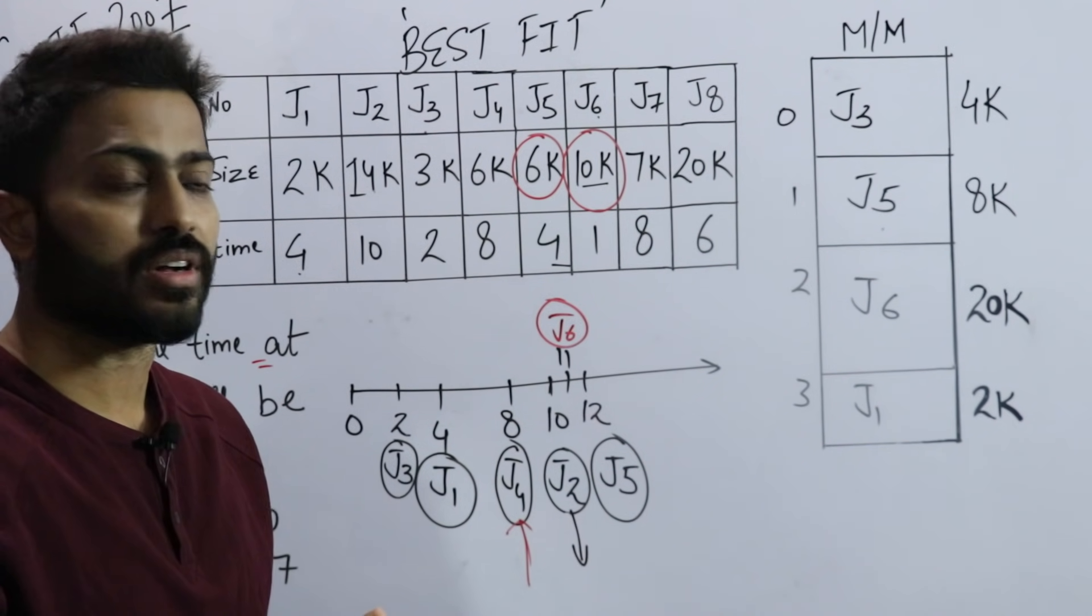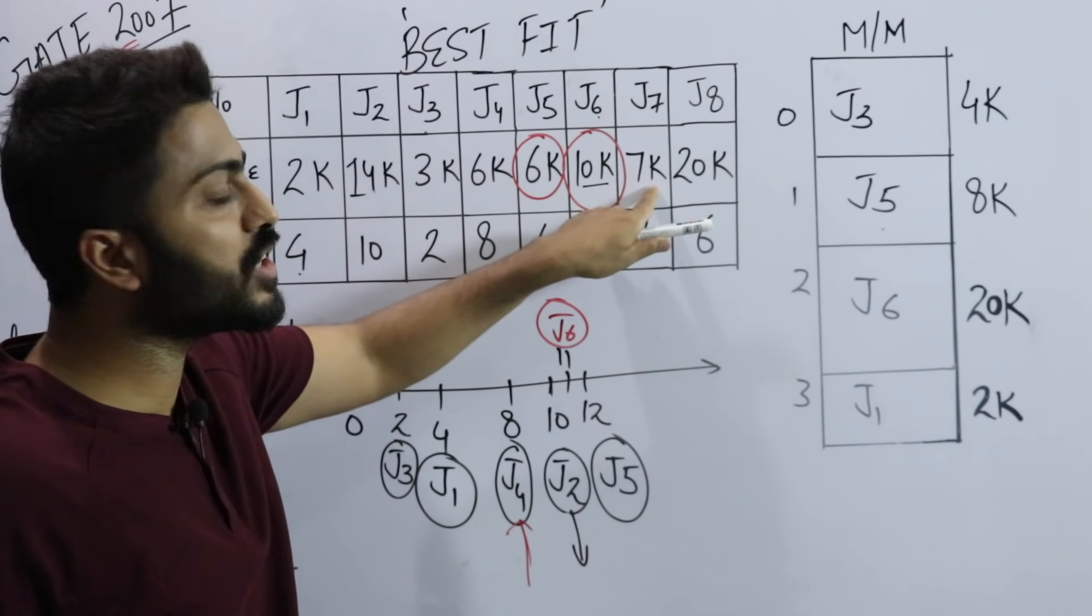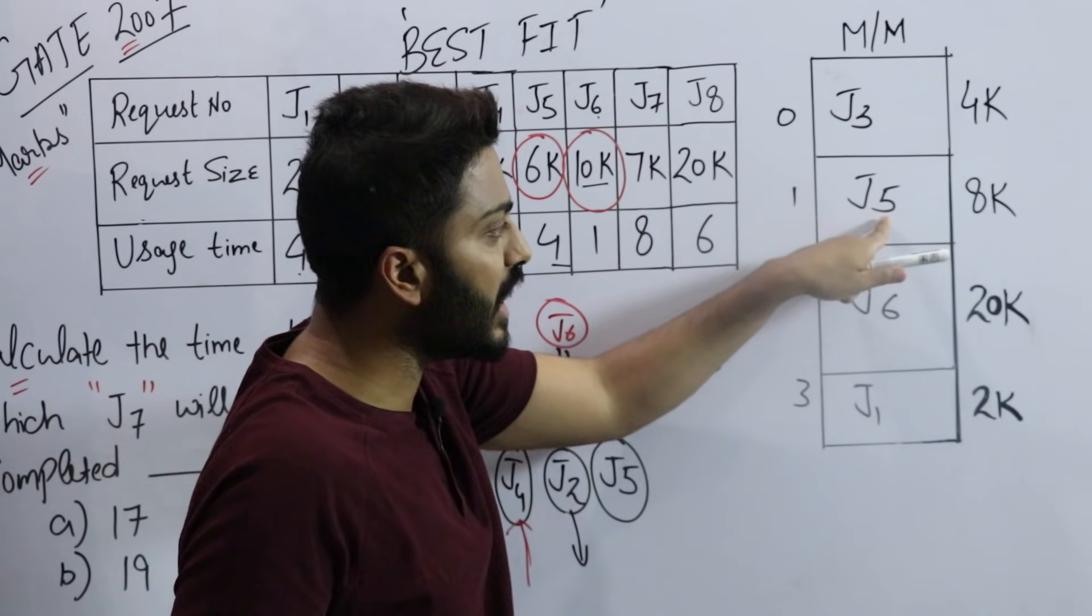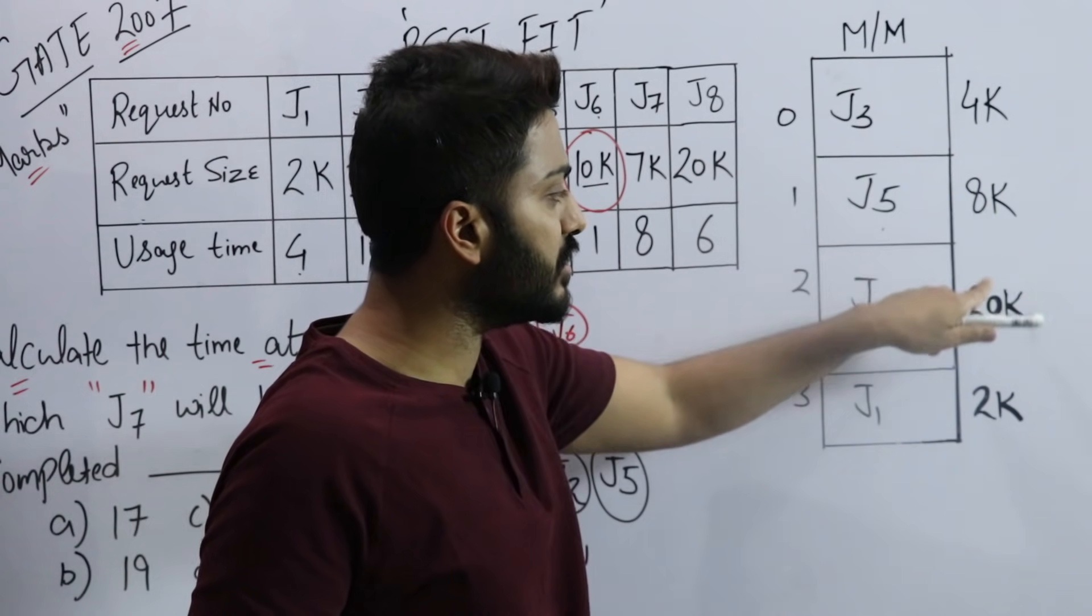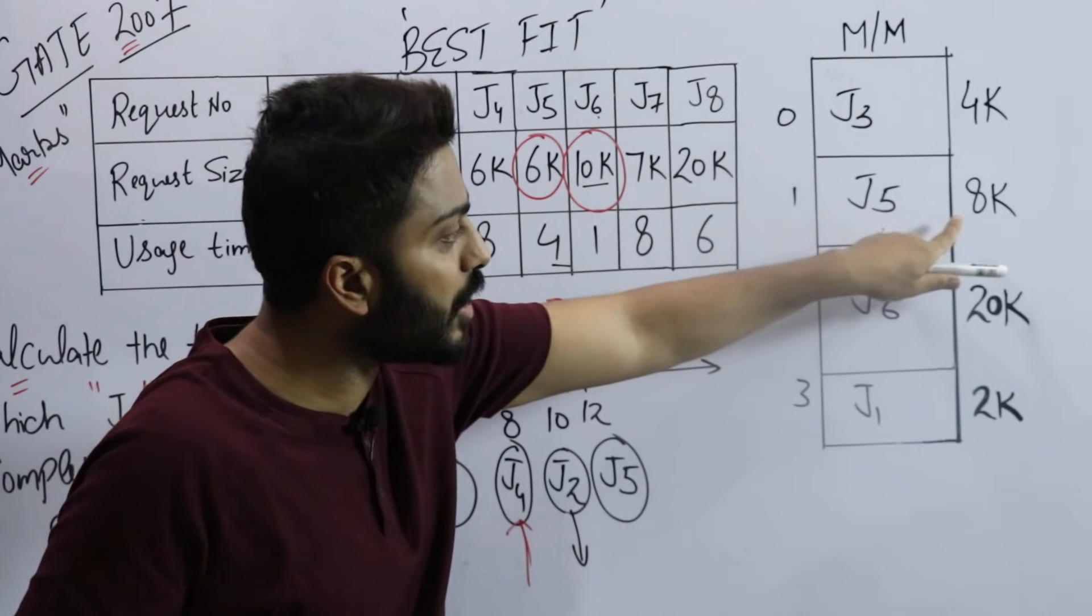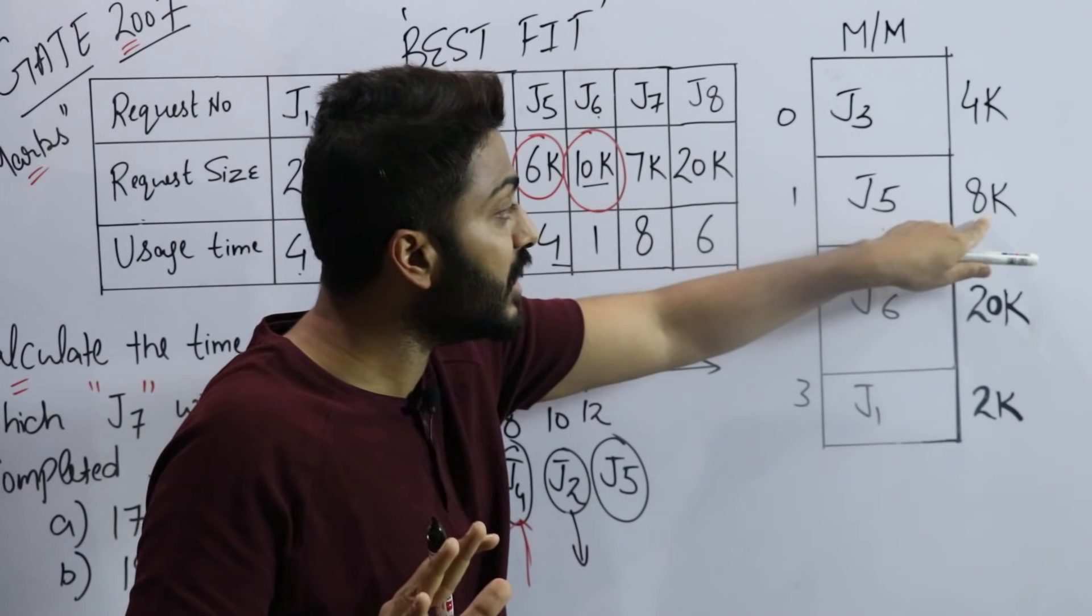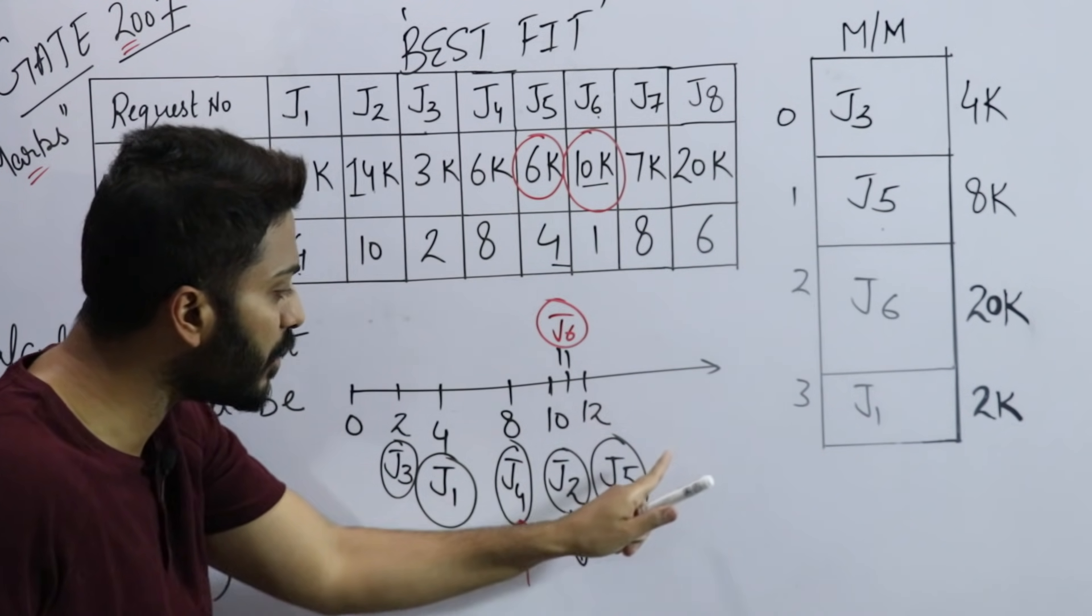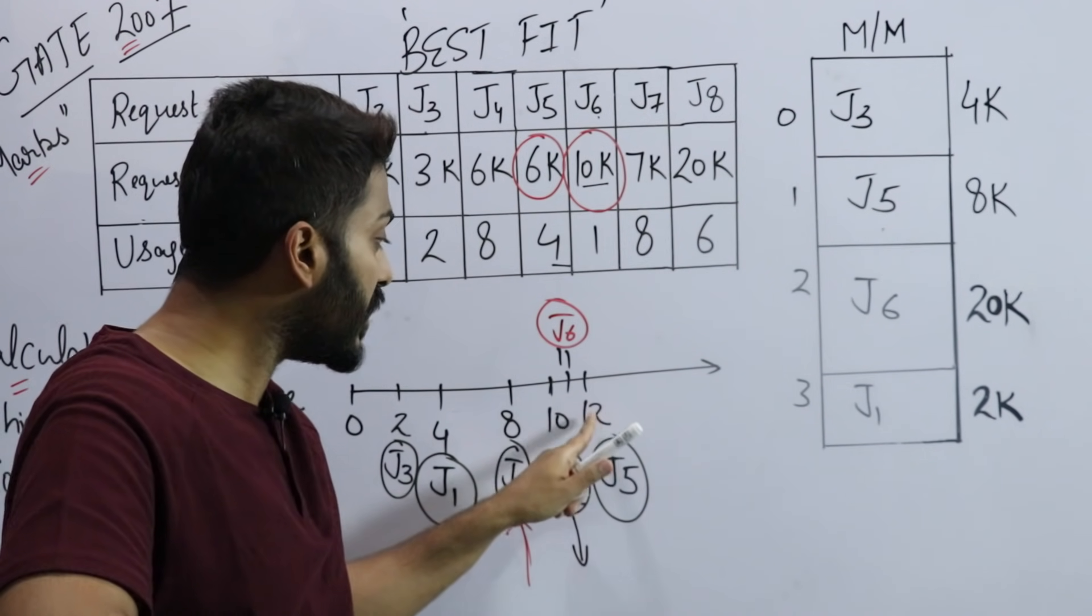So J6 will enter memory at time 10. J6 needs to stay for only 1 second, so at time 11 I mention here that J6 will exit. Now J7 - we have to find when J7 will complete. J7 needs 7k space. According to size, we can place it here or here.